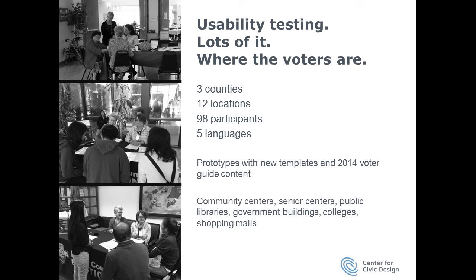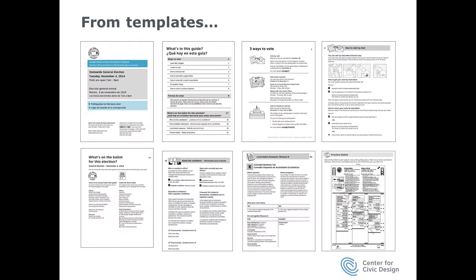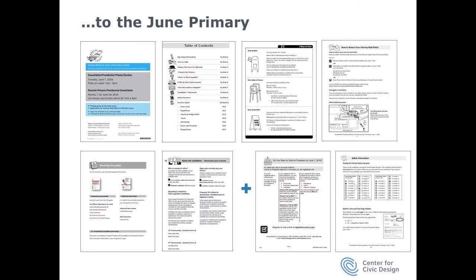One of the big things we learned and have continued to learn is how important basic information about what it's like to be a voter is for people who may have little frame of reference for the mechanics of voting. They know about the big picture of democracy — it's the little pictures of what do I do that can trip people up. We tried to incorporate all that into our templates. What I'm showing quickly is just a few of the pages — one big thing we learned in the 2014 testing was how important it is that each page have a kind of separate look. Orange County added icons to the table of contents to match those icons to the same icon used at the top of the page.